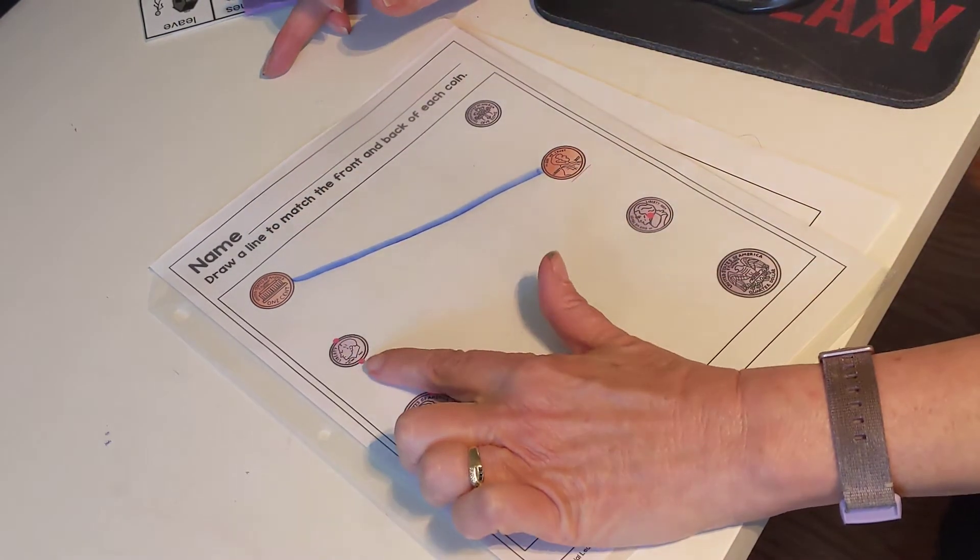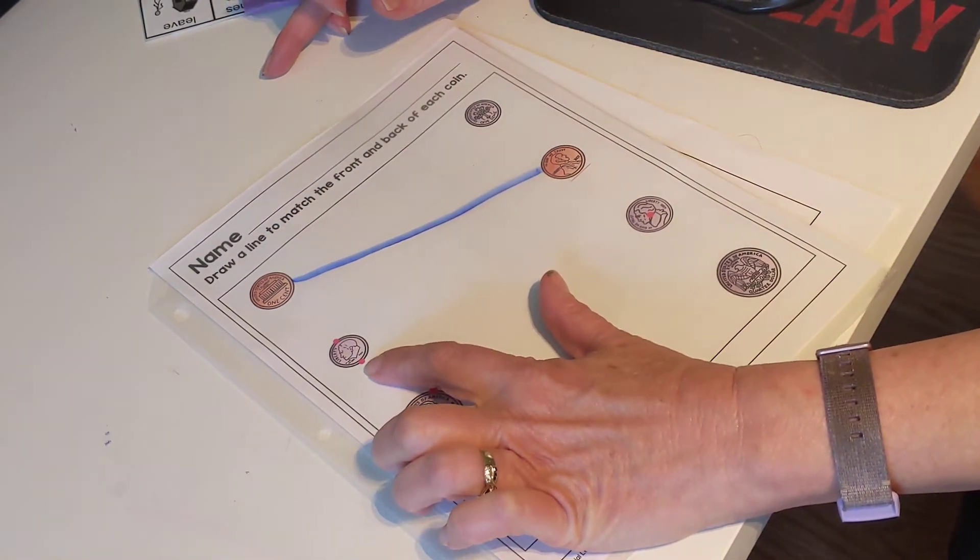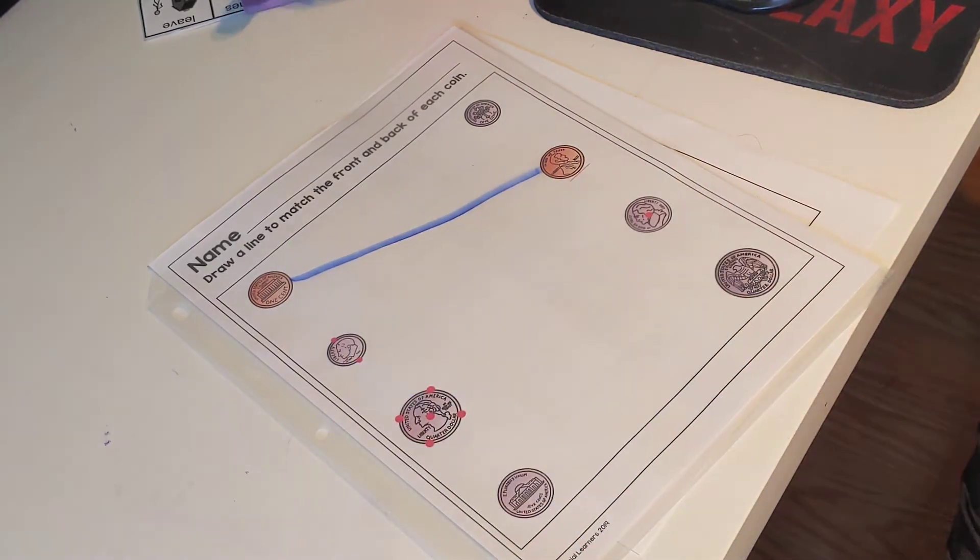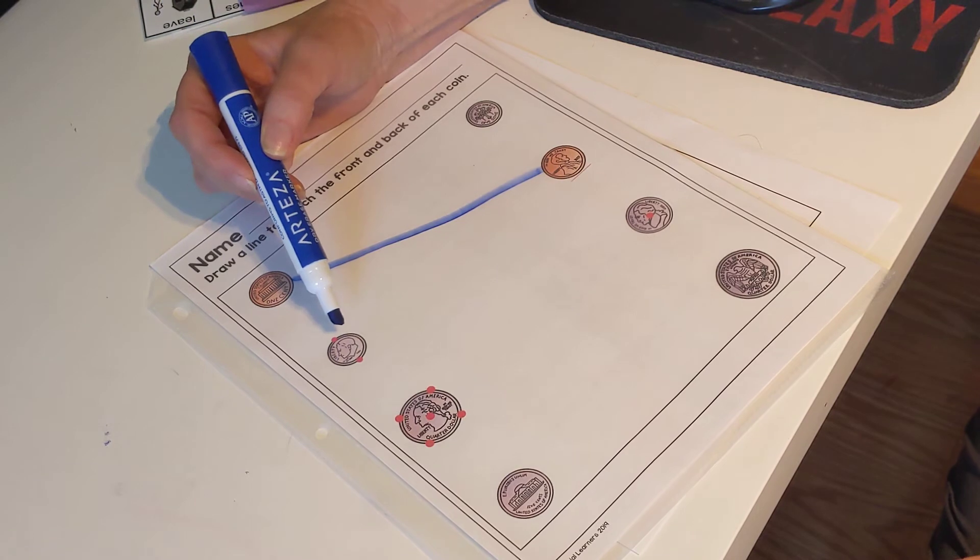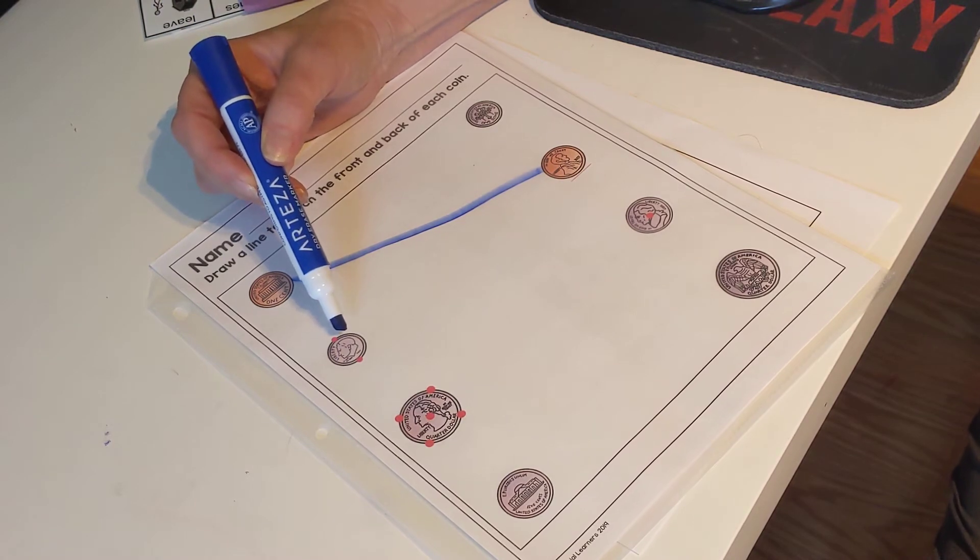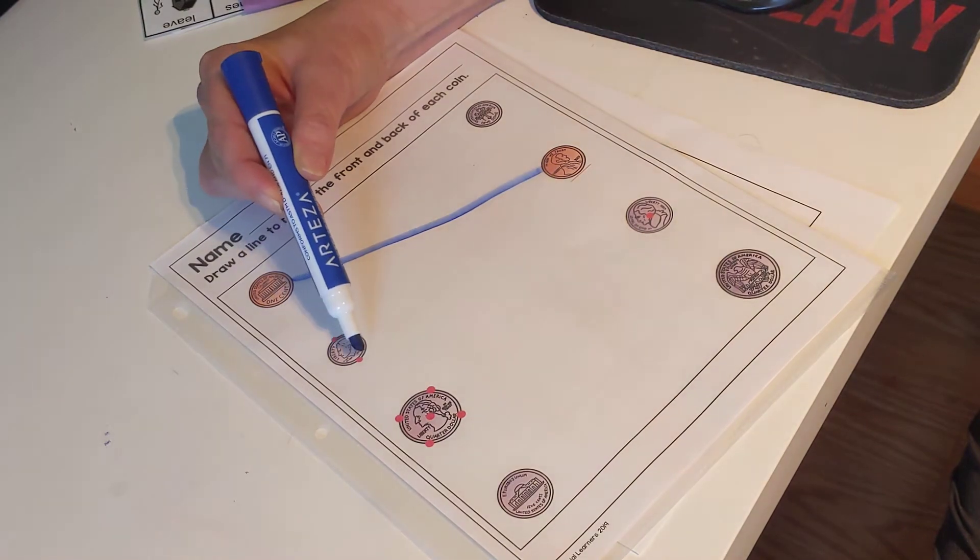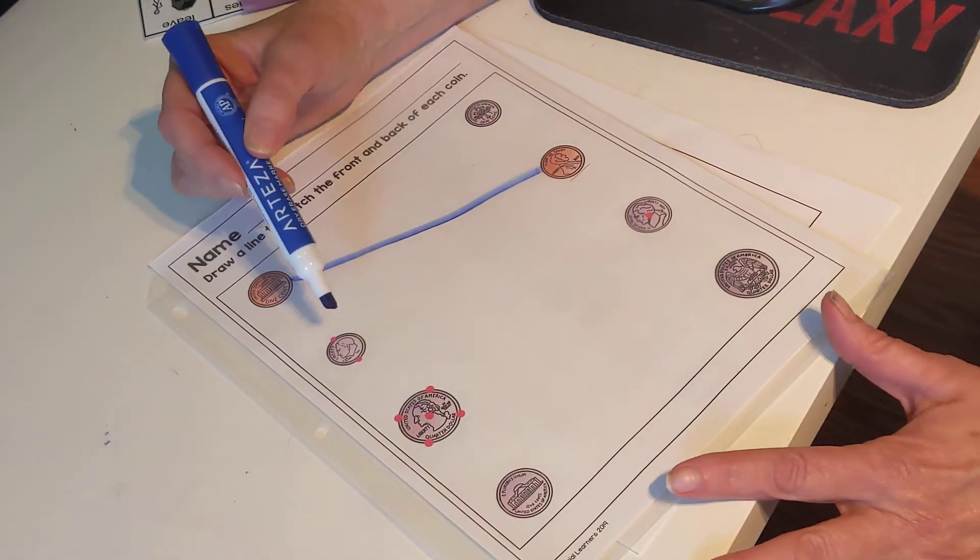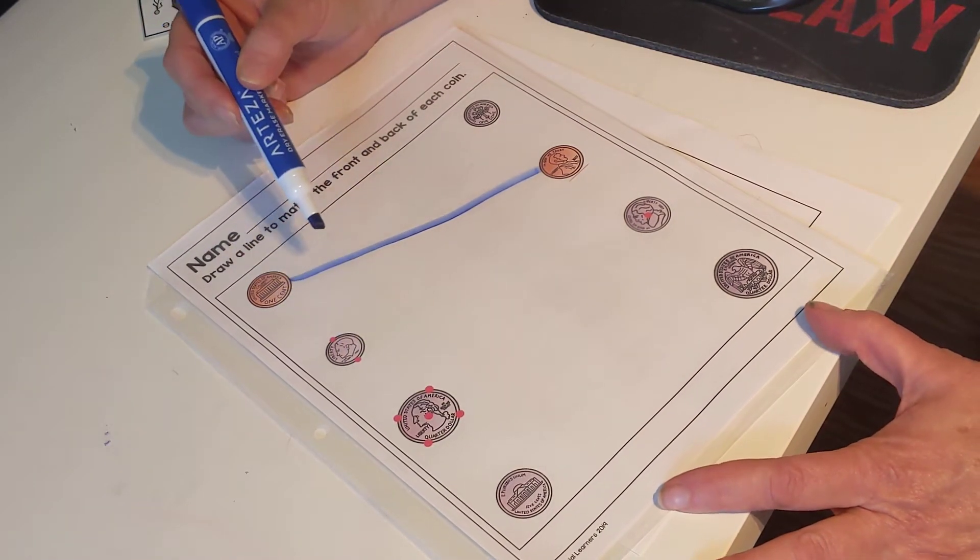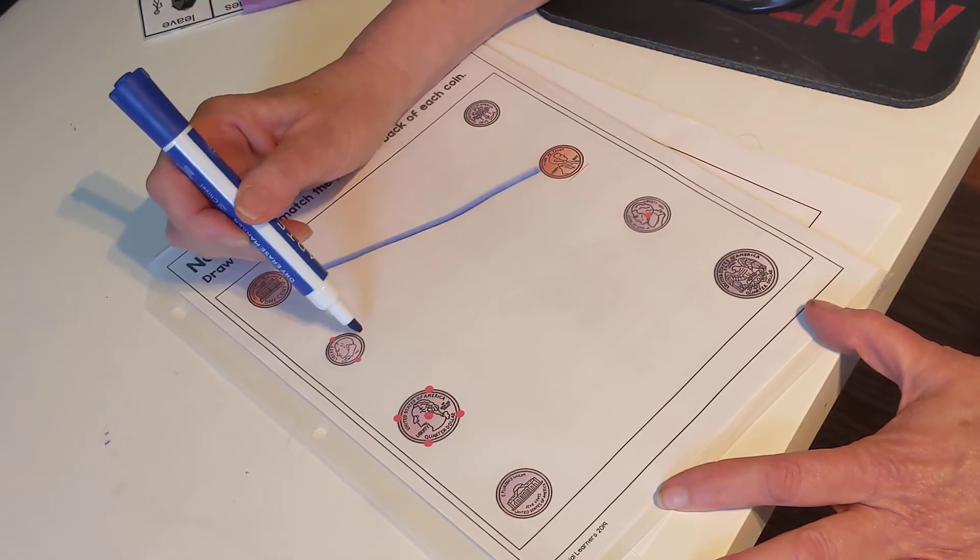We come down here. Who remembers what this is called? You're right, it's a dime. And we count by fives. Two touch points. Five, ten. Touch point at the top, touch point at the bottom. Here's the front of the dime. Here's the back of the dime.